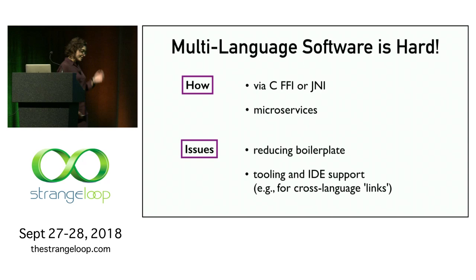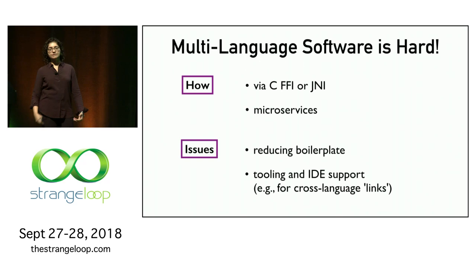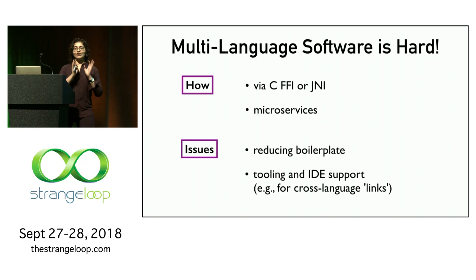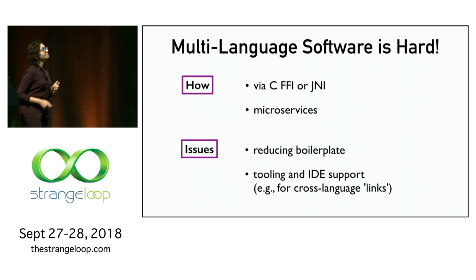There are other issues with developing multi-language software. A lot of people have spent time on tools that help reduce boilerplate, and there are many issues with tooling and IDE support. For instance, if you have an identifier in one language and you need to refer to it from another, it would be nice if IDEs provided support for those kind of cross-language links. This talk is not about tooling support, though I will say something about it towards the end.